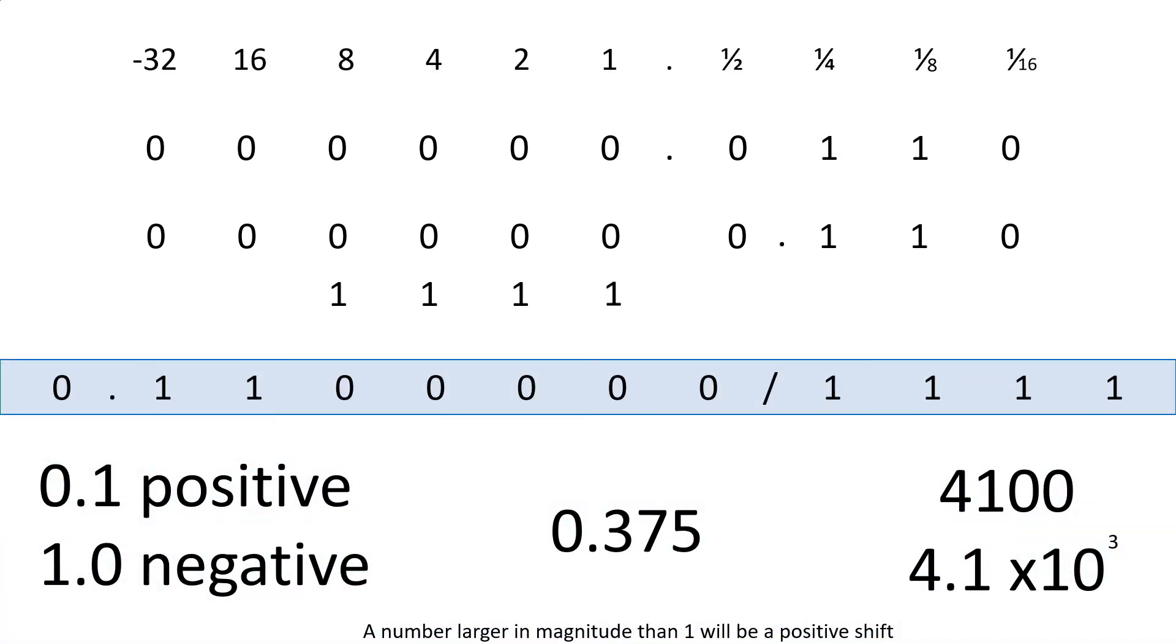So our final answer is going to start at this point here, 0.110. I will pad the rest out with 0's because, again, we want to have our eight digits. Now we've only got four, so we need to add another four 0's onto the end, which is my first part, which is my mantissa. My exponent was four 1's, so there's my final answer.